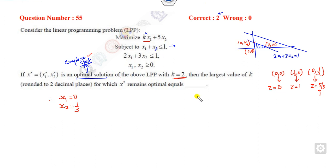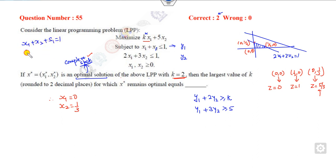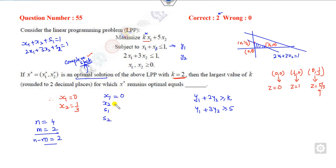To find the value of k, apply the complementary slackness condition. Write the dual constraints: if y1 and y2 are the dual variables, the first constraint involves k and the second is y1 plus 3y2 greater than or equal to 5. With n equal to 4 variables and m equal to 2 constraints, n minus m equals 2, so two values must be zero. One value x1 is already given as zero, meaning one slack variable is non-zero. Checking the equations, s2 equals zero and from this you can get the value 2/3.